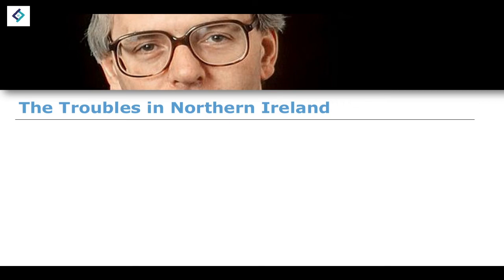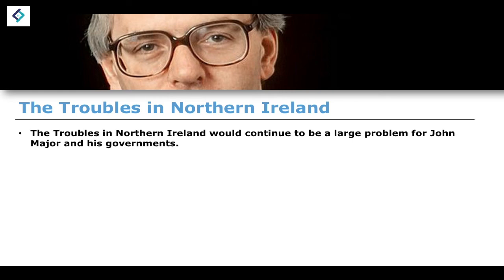Finally, let's talk about the developments that take place when it comes to the troubles in Northern Ireland. We're starting to see coming towards the end of the troubles under John Major and then under Tony Blair. It would still continue to be a large problem for John Major and the majority of his governments, and we have a number of examples of terrorist actions that take place.